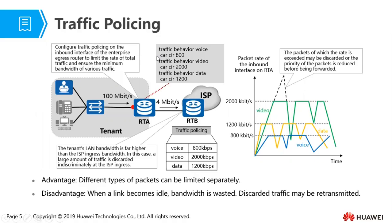In this particular scenario, we are connected to our ISP via a 4 megabit per second link, but internally we are connected to our gateway via a 100 megabits per second link. If we don't control what comes in, then we are most likely going to encounter packet loss, because allowing 100 Mbps of data through will cause congestion and packet loss at the ISP.